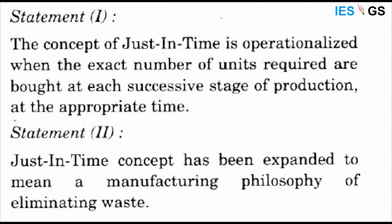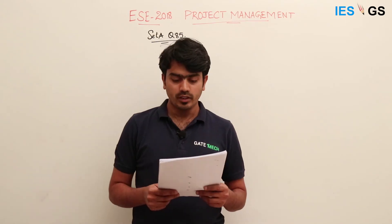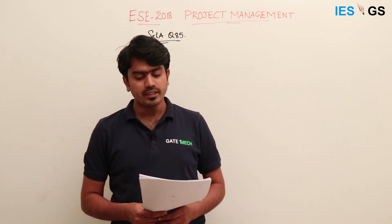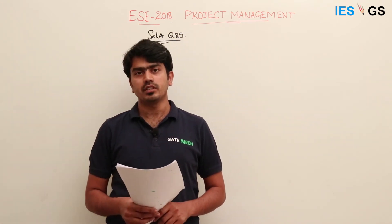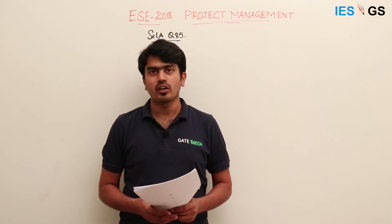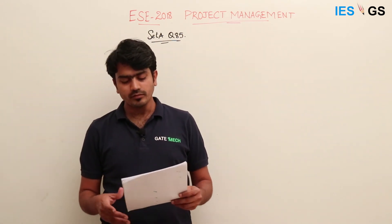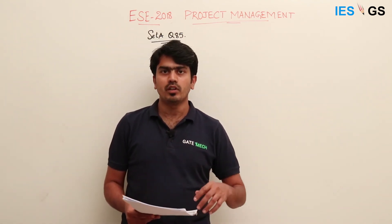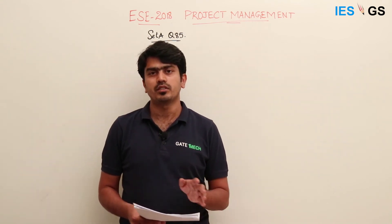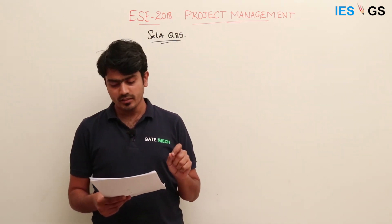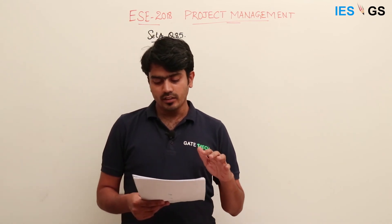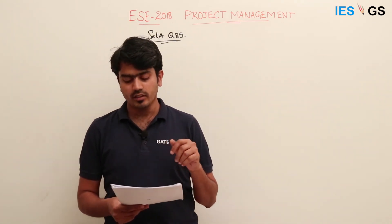Statement two is: the just-in-time concept has been expanded to mean a manufacturing philosophy of eliminating waste. Just-in-time is a process methodology and strategy followed in manufacturing organizations mainly to eliminate or reduce waste in the manufacturing process, to avoid unnecessary delays, and to avoid unnecessary inventory at production stages.